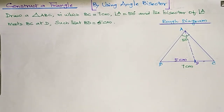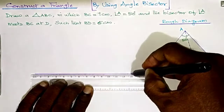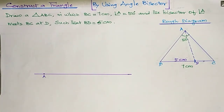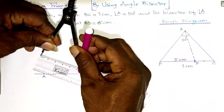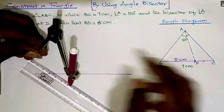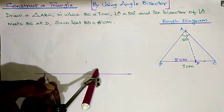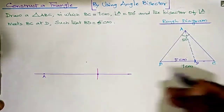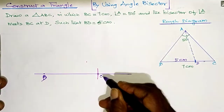Now draw the base BC. Take a scale and draw a straight line, mark a point, then using a compass take BC equal to 7 cm. Take the 7 cm measurement in the compass to draw BC equal to 7 cm and mark it. Label it BC.